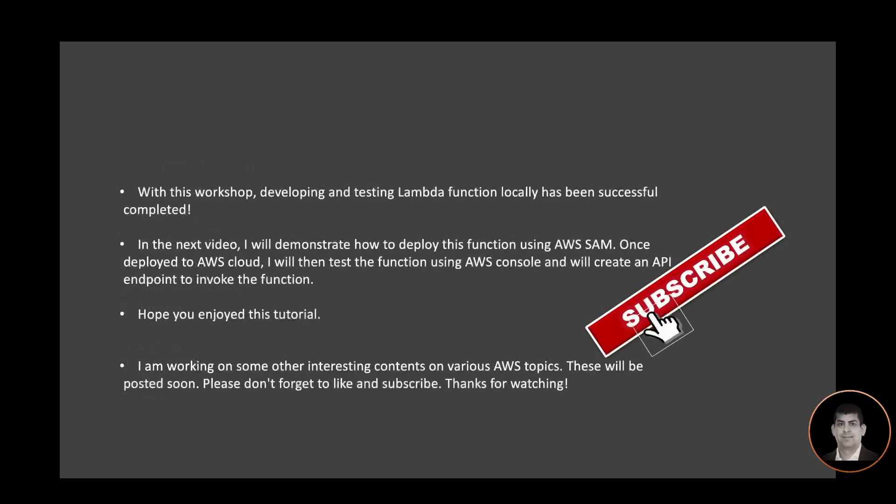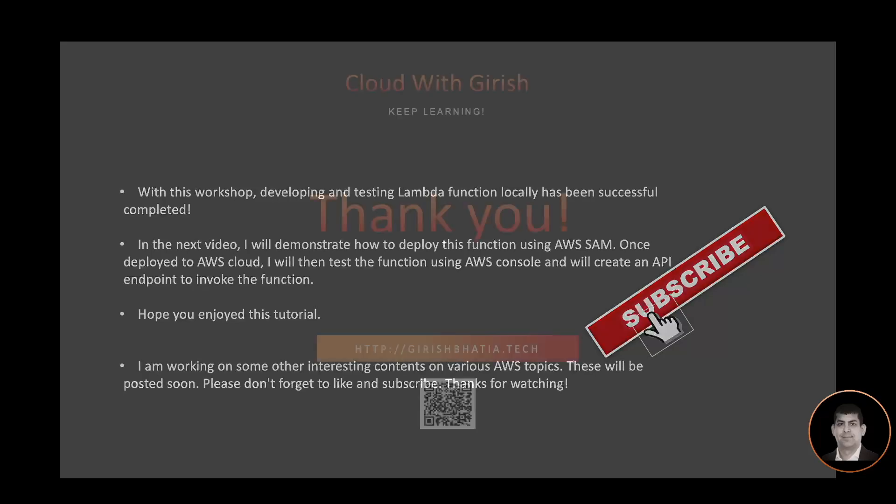With this workshop, developing and testing a Lambda function locally has been successfully completed. In the next video I will demonstrate how to deploy this function using AWS SAM. Once deployed to AWS Cloud, I will test the function using the AWS Console and create an API endpoint to invoke the function. Hope you enjoy this tutorial. I am working on other interesting content on various AWS topics — these will be posted soon. Please don't forget to like and subscribe. Thanks for watching.